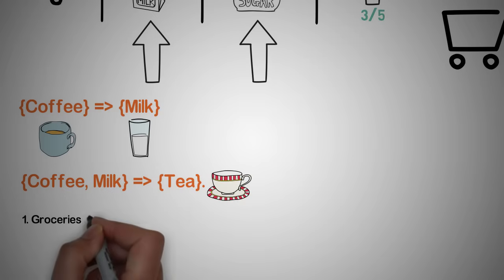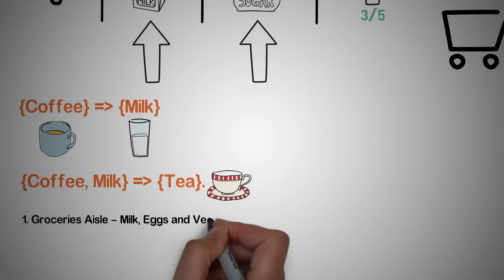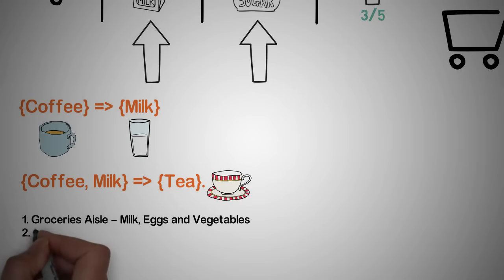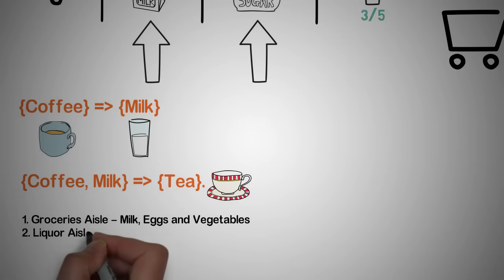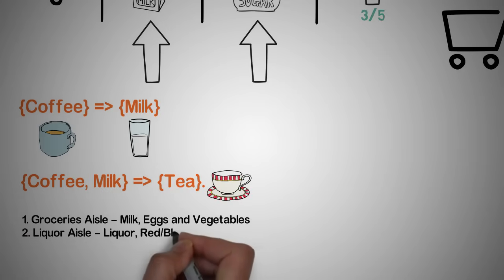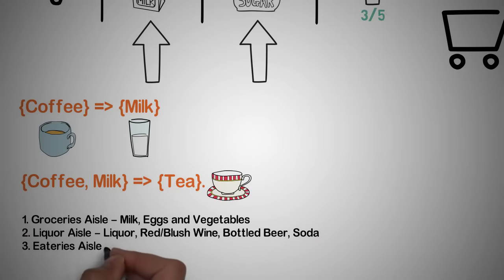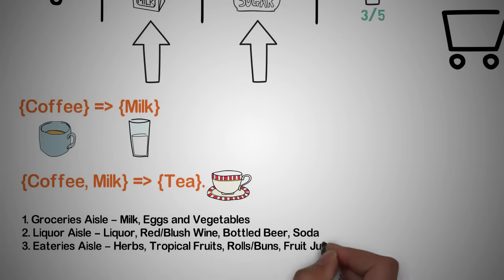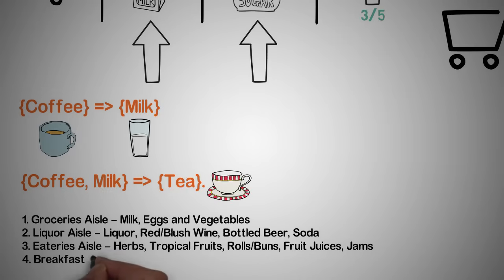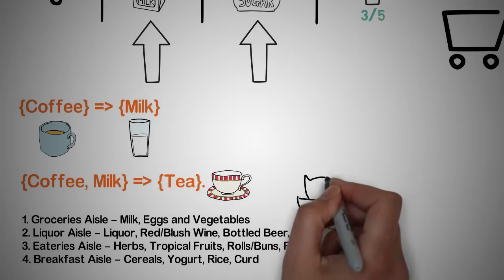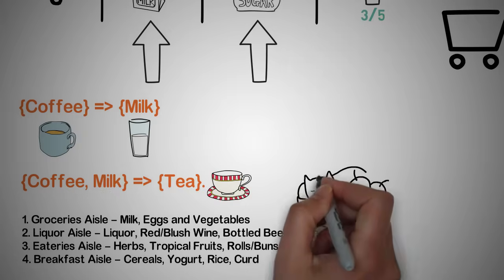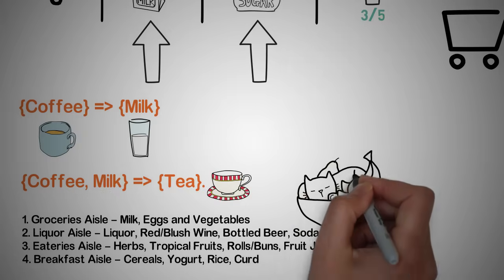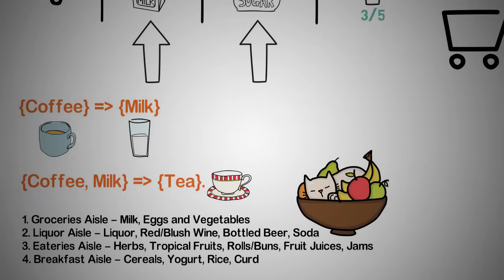An item set is a mathematical set of products — for example, a grocery aisle containing milk, eggs, and vegetables; a liquor aisle with liquor, red blush wine, bottled beer, and soda; an eatery aisle with herbs, tropical fruits, rolled buns, fruit juices, and jams; and a breakfast aisle with cereal, yogurt, rice, and curd.